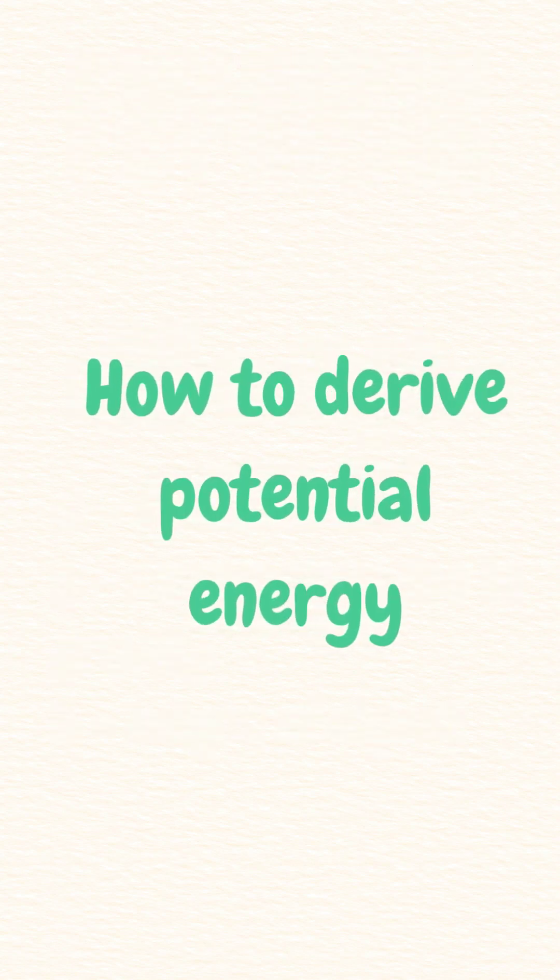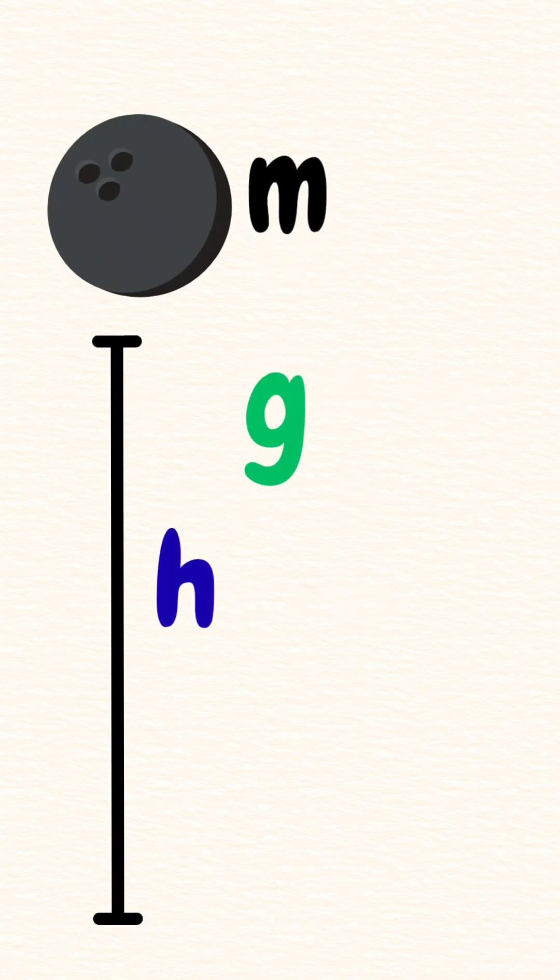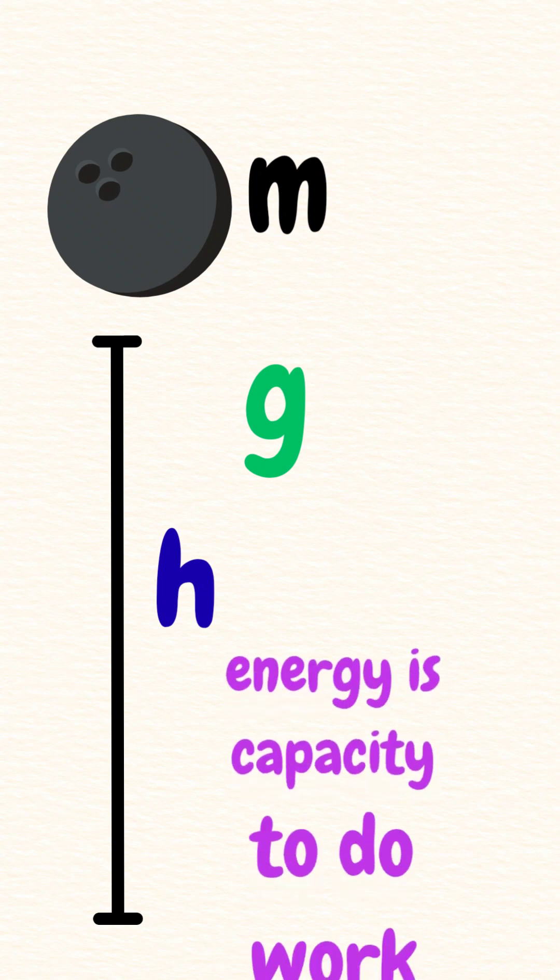Now we are going to derive potential energy. Suppose we have a rock of mass m, h is the height, and g is acceleration due to gravity. As you know, energy is the capacity to do work.